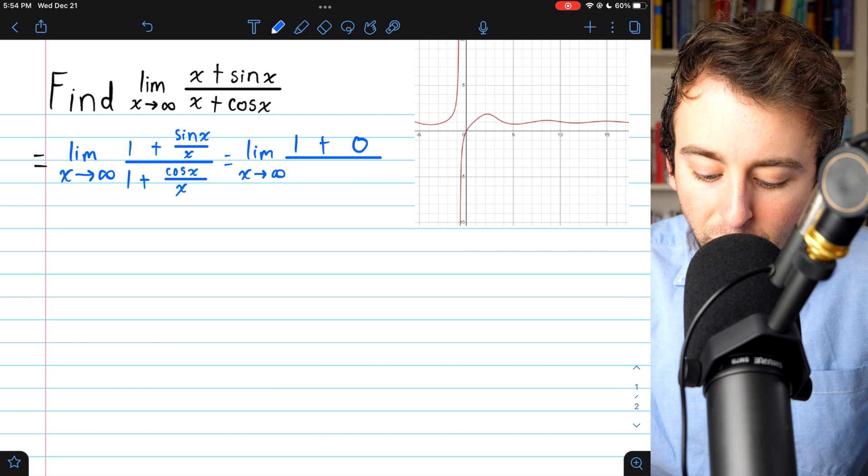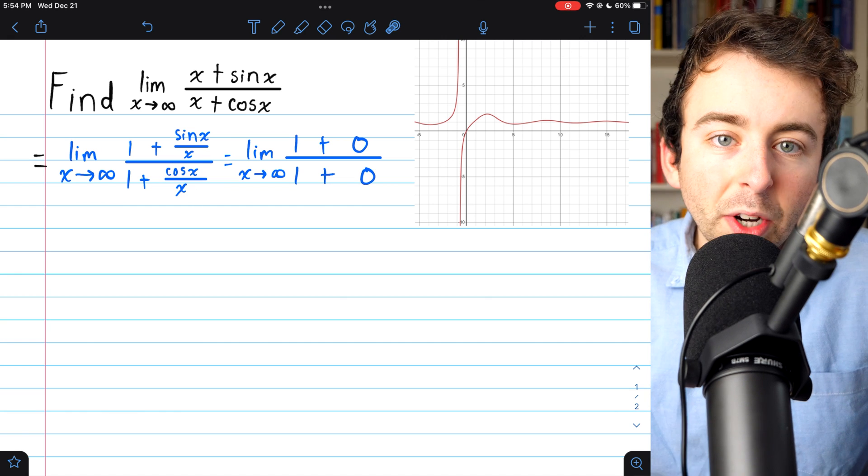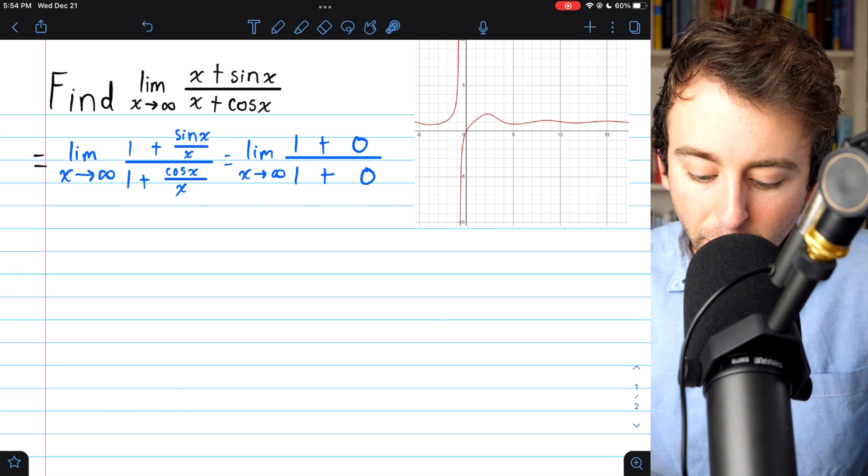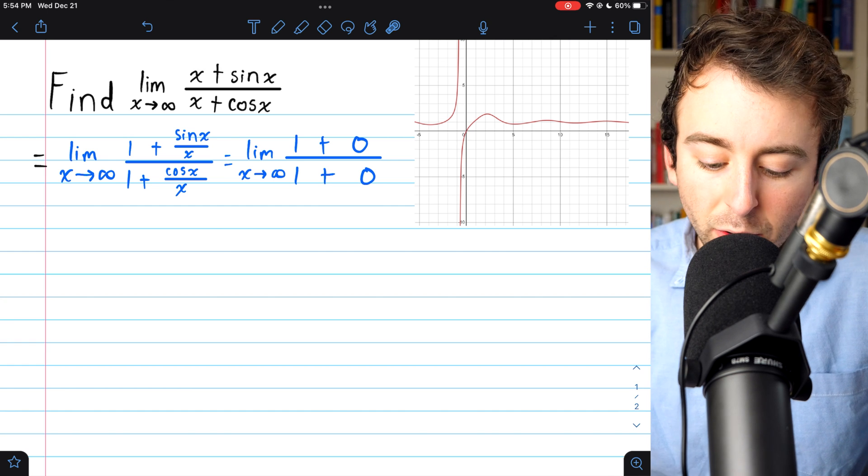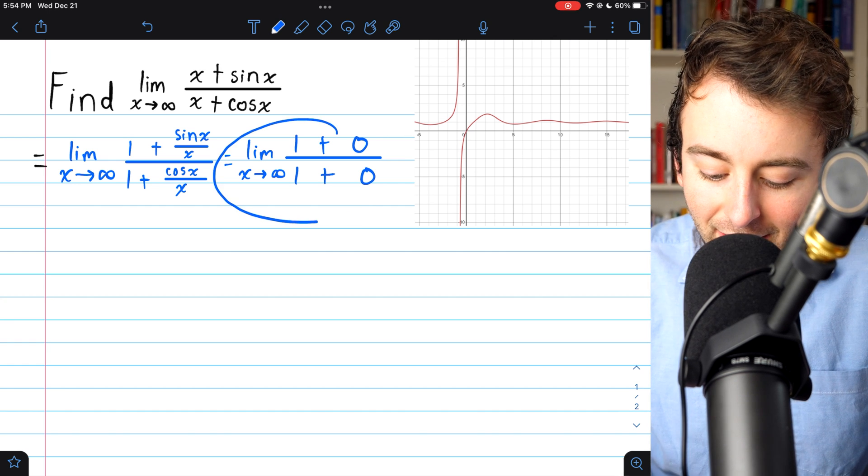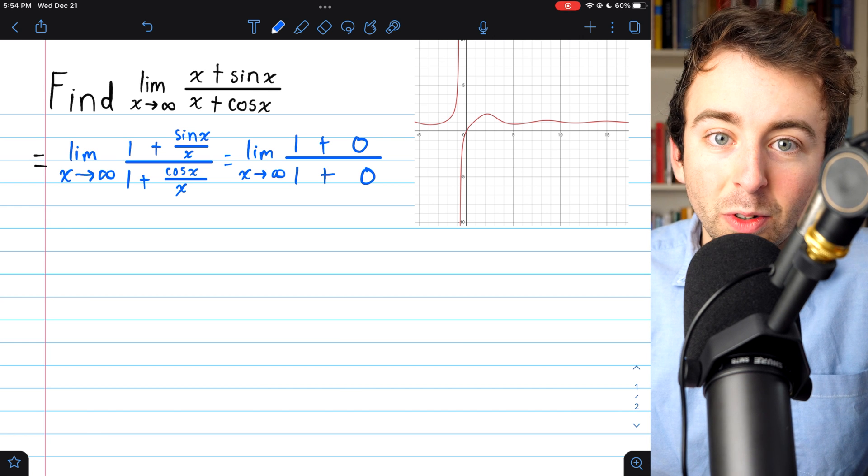The same logic gives us 1 plus 0 in the denominator. Again, cosine x over x. You could establish that converges to 0 as x goes to infinity using the squeeze theorem. And this is equal to 1. Because it's just 1 over 1 as x goes to infinity.